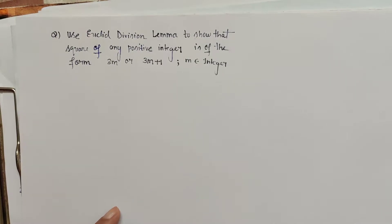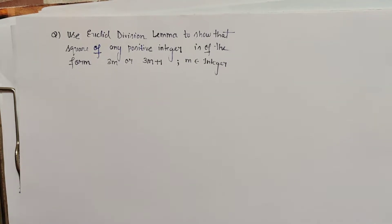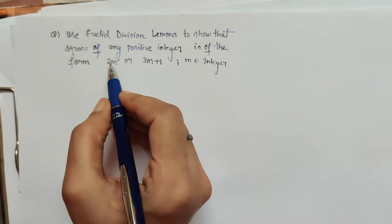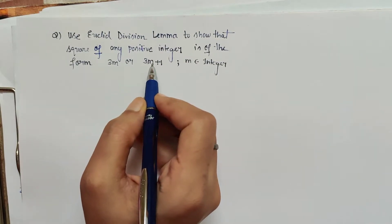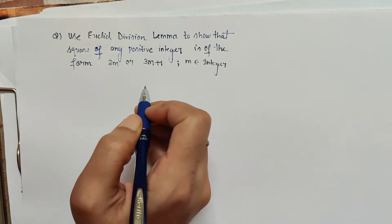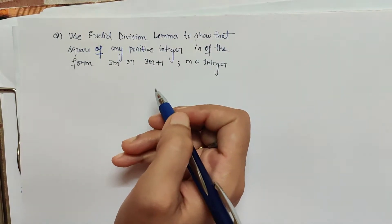Hello friends. In this video we are going to see how to prove the following question: using Euclid's division lemma, show that the square of any positive integer is of the form 3m or 3m plus 1, where m is some integer.